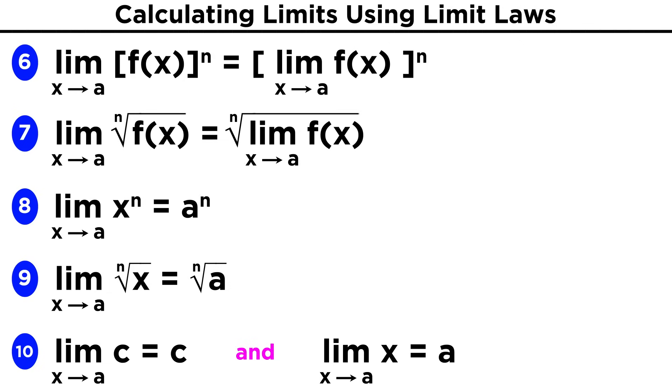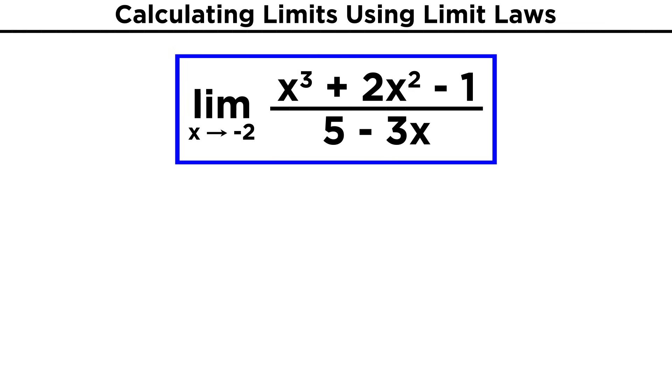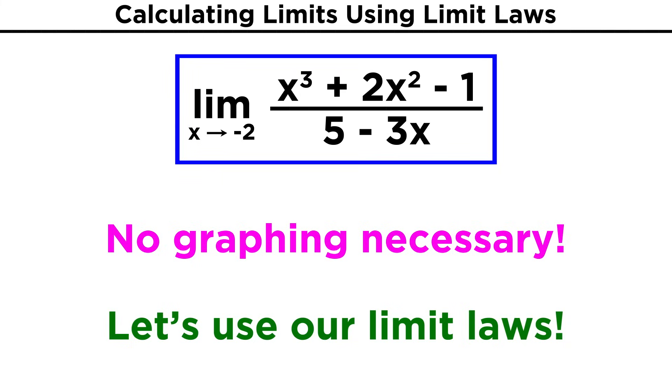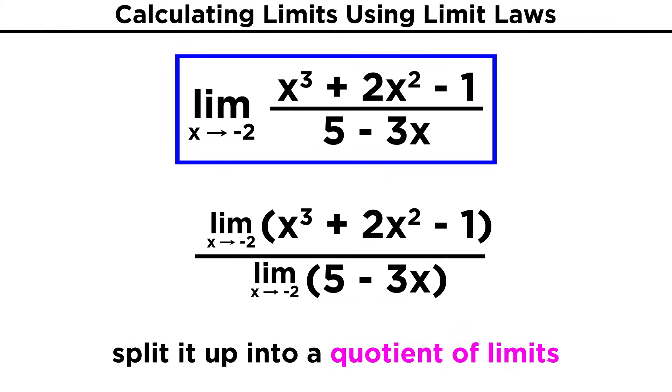That seems like a lot of laws, but they come in very handy when trying to assess the limit of a more complex function. Take something like x cubed plus two x squared minus one over five minus three x. Say we want to find the limit of this function as x approaches negative two. Now that we have these laws, we don't have to graph the function and inspect it visually, as that would take a while. Instead, let's apply the laws. We have a quotient, so we can just evaluate the limit of the numerator and the limit of the denominator separately, because of the law we know regarding quotients.